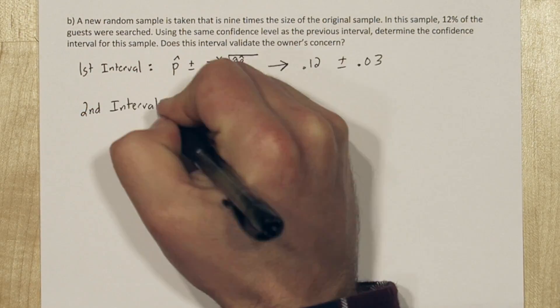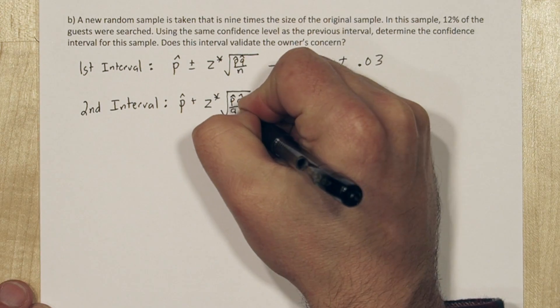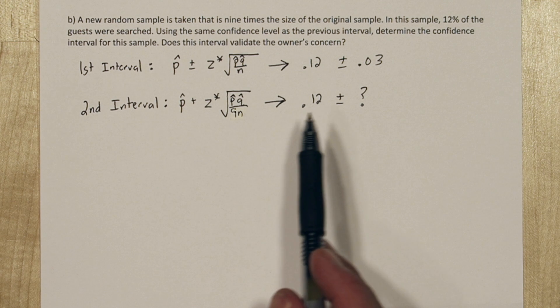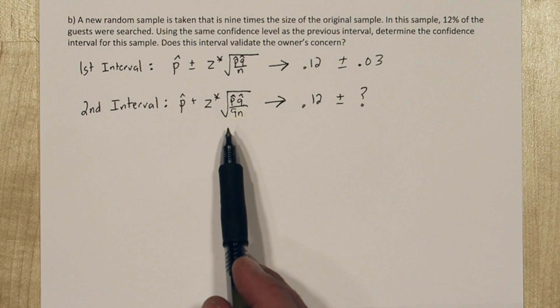For the second interval, it's constructed the same way, but we know the sample size is 9 times the original size, so for sample size down here we put 9 times n, and we know the point estimate is 0.12. But we're trying to figure out what the margin of error is.